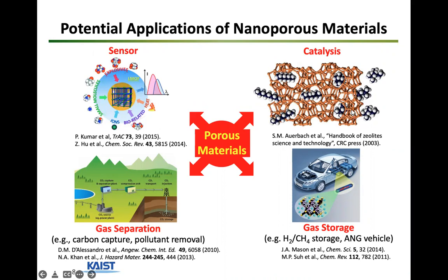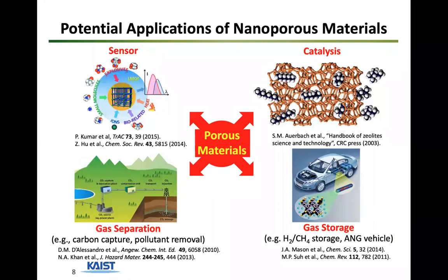Some applications of nanoporous materials include sensors, where gas molecules can adsorb onto these materials and produce a chemi-resistive response for detecting toxic gases. Second is catalysis, where reactions happen inside the pore to produce desired chemical products. Gas separation is another big application, including CO2 separation, where based on pore geometry and size you can selectively adsorb certain molecules while hindering others. Finally, storage — such as methane and hydrogen — where the large surface area allows a lot of gas adsorption compared to the case without the material.